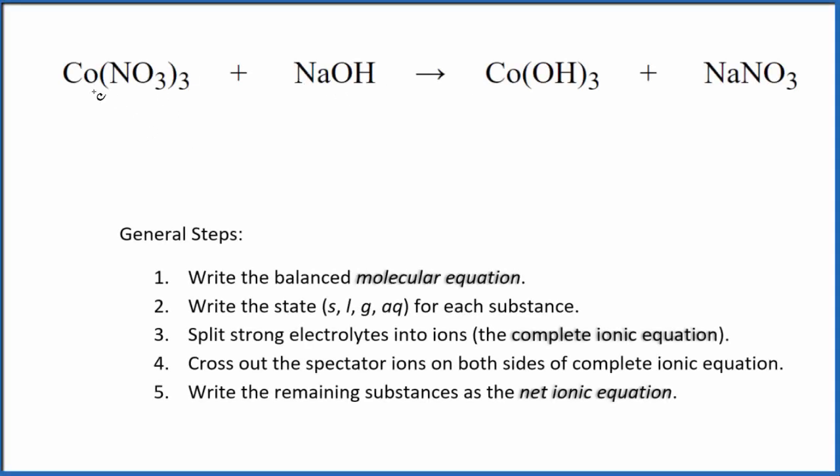Let's write the balanced net ionic equation for Co(NO3)3 and NaOH. We're talking about cobalt here - this is a small 'o', nitrate. Cobalt three nitrate and sodium hydroxide.